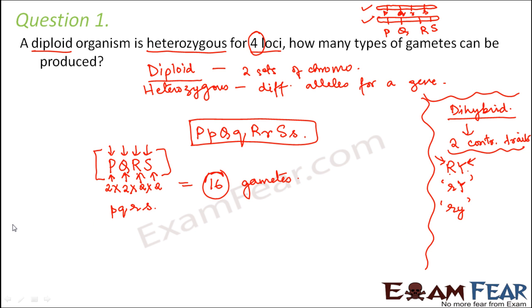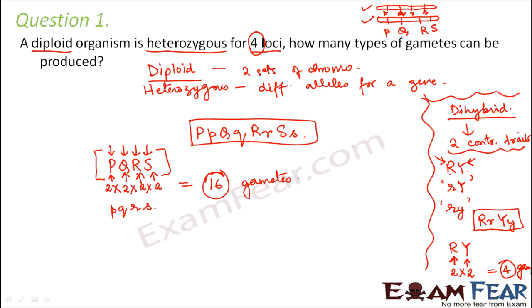If you want to verify this, try it for an organism with two contrasting traits — the di-hybrid cross scenario. Each gamete should have two letters. R can take two values — capital R and small r. Y can take two values — small y and capital Y. Multiply them: you get four. So four gametes are possible in that scenario. These 16 or four gametes are possible only if they follow the principle of independent assortment. You can use the formula 2 to the power n, where n is the number of contrasting traits, but this applies only in the case of independent assortment.